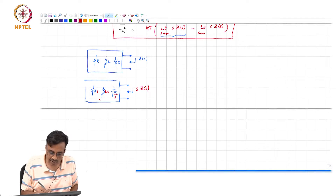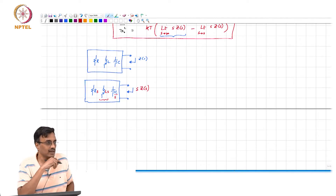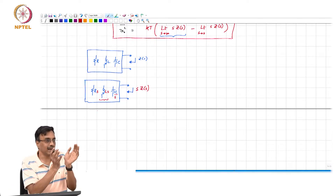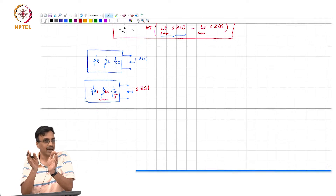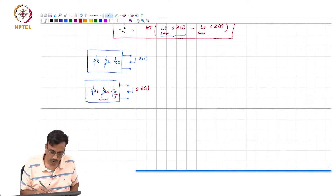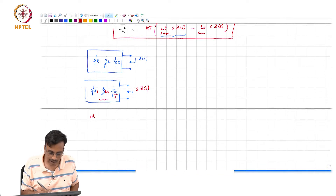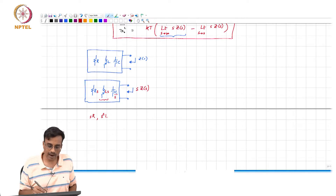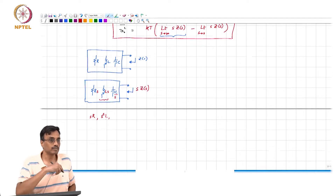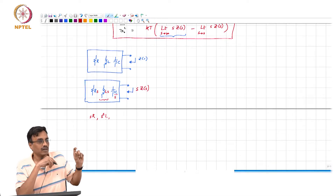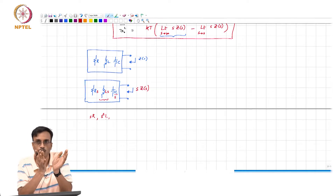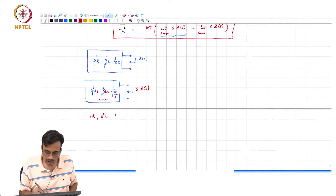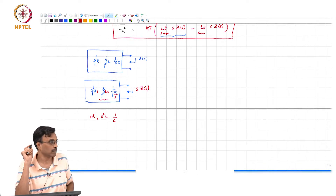As s tends to infinity, s·R becomes infinite and s²·L also becomes infinite. So to interpret the limit of s·Z(s) as s→∞, you open all resistors and inductors. Once you do that, you will get a network with only capacitors.